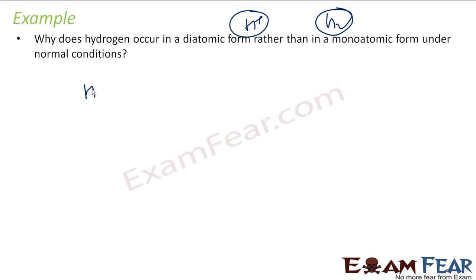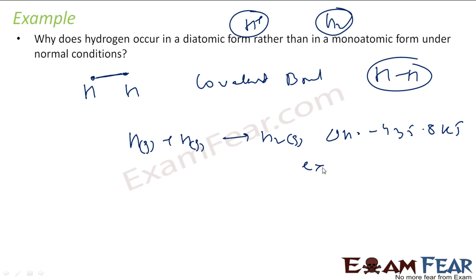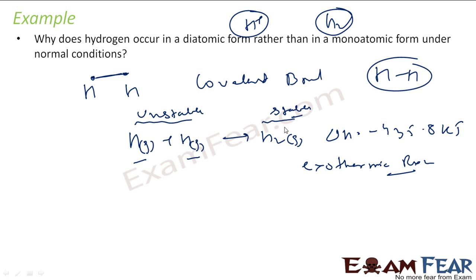Hydrogen has one electron, and to achieve stability it needs two electrons. That is why it pairs with another hydrogen atom — each shares electrons to form a covalent bond, resulting in H₂. If you take two hydrogen atoms and react them, you get H₂ and delta H is −435.8 kJ, which is an exothermic reaction. Monoatomic hydrogen is very unstable, each having only one electron, while H₂ is stable with each atom having two electrons.